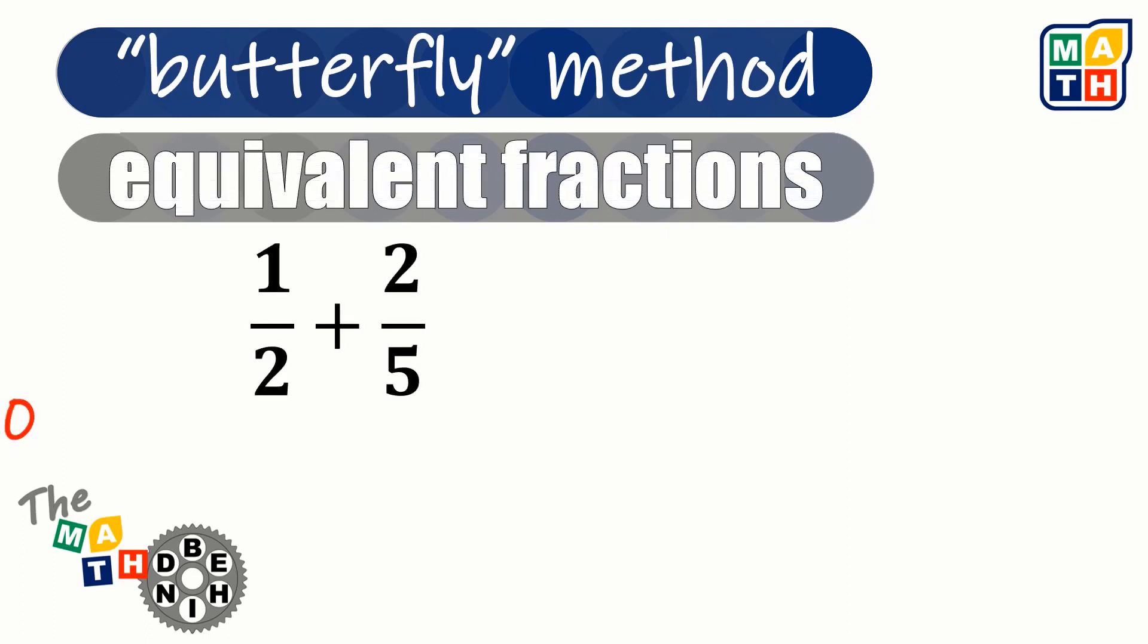Usually, if we have these expressions, we are to get the LCD first, which is 10. Then, we need to make sure that these two fractions will be transformed to their equivalent fractions bearing denominator 10 to make them similar fractions. For 1 half, we could multiply both the numerator and denominator by 5 so that the denominator now would become 10. Instead of 1 half, we now have 5 tenths, which is the equivalent fraction of 1 half.